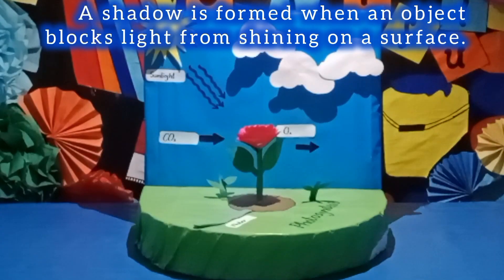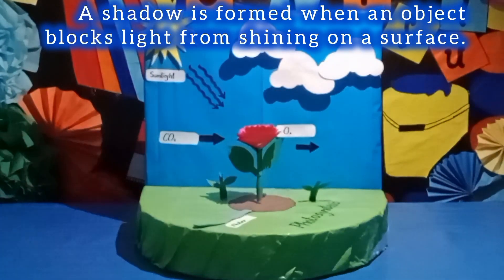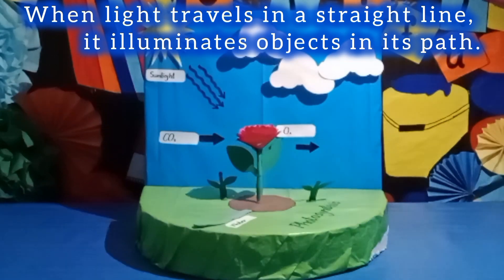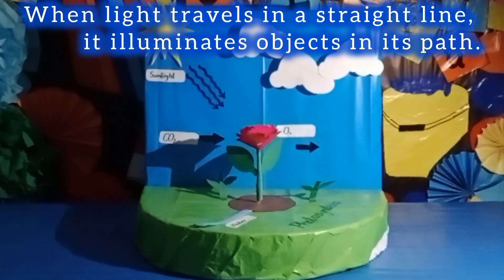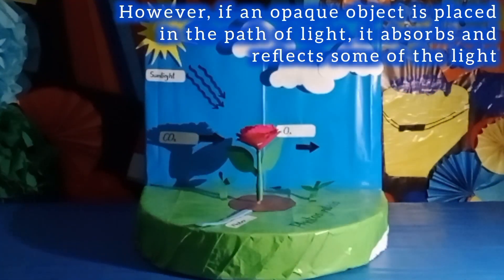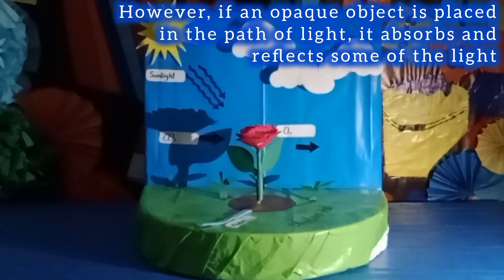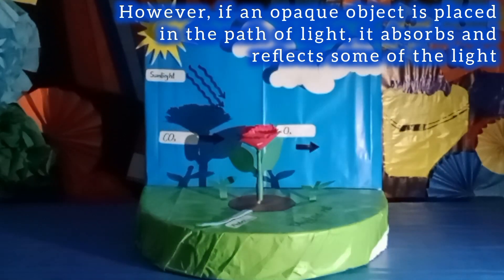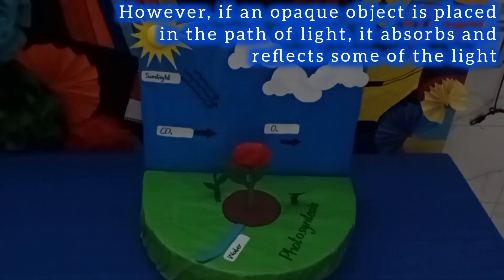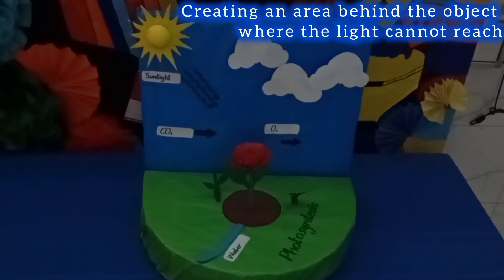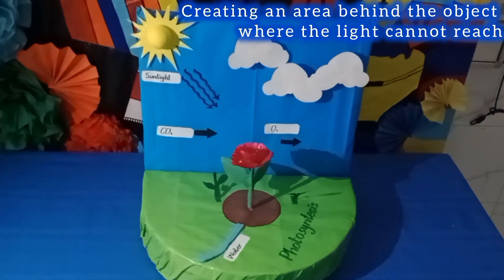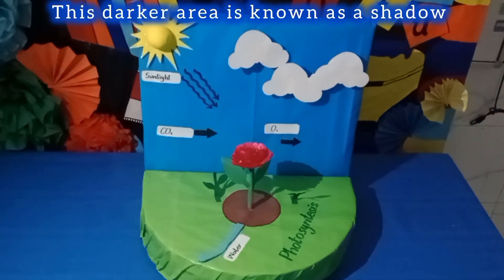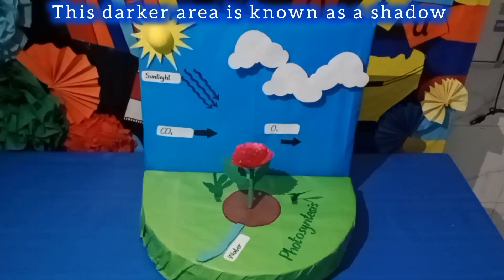A shadow is formed when an object blocks light from shining on a surface, when light travels in a straight line. It eliminates objects in its path. However, if an opaque object is placed in the path of light, it absorbs or reflects some of the light, creating an area behind the object where the light cannot reach. The darker area is known as a shadow.